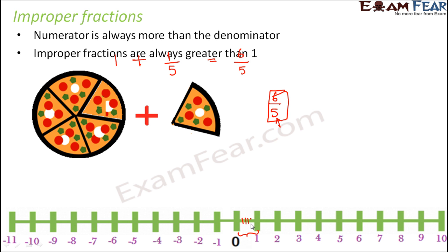So one, two, three, four and five. So we have done five divisions. So now since we have divided it into five equal parts, obviously this point where one is located would be five by five.